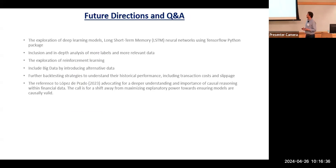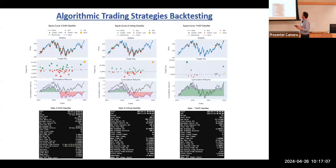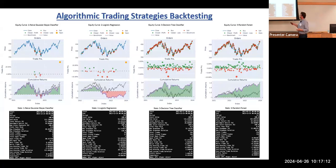If we want to look for future directions, we can explore deep learning models like long short-term memory neural networks which use TensorFlow Python. We can also include more labels, explore reinforcement learning which I'm sure we're going to be exploring, and include big data by introducing alternative data. Further backtesting is needed to understand the transaction cost problem because what I showed you here is net of fees.